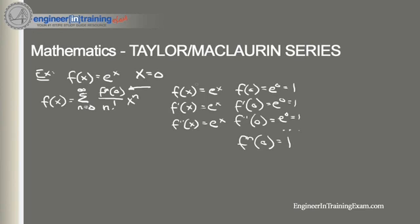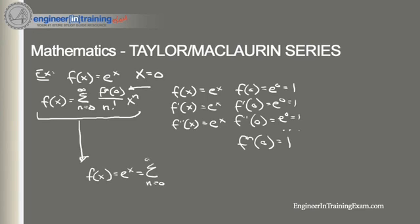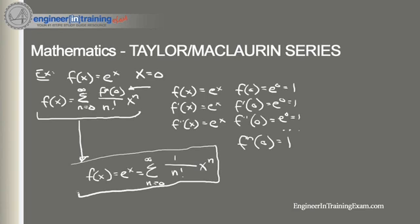Now all we need to do is plug that information into our general formula. We find that the Maclaurin series of f(x) equals e^x is equal to the sum from n equals 0 to infinity of 1 divided by n factorial, times x to the n. That is our general Maclaurin series representation of the function e^x.